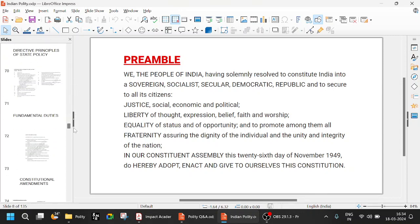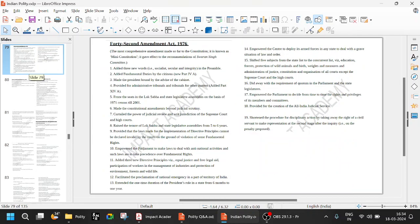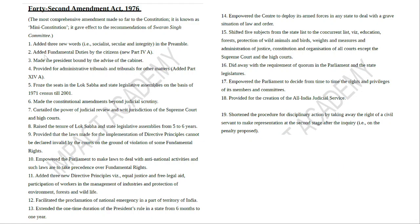Let us look at the 42nd Amendment Act, which is very important. It is also called the 'mini constitution' because so many changes were made. One of the most important things it did was add three new words — Socialist, Secular, and Integrity — to the Preamble. One more key point: the Preamble has been amended only once, and it added these three new words through the 42nd Amendment Act of 1976, on the recommendations of the Swaran Singh Committee. That was during the Emergency — in 1975 there was an Emergency, and they brought in this 42nd Amendment Act.